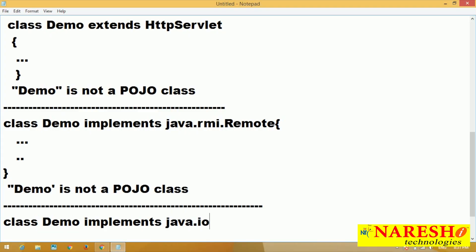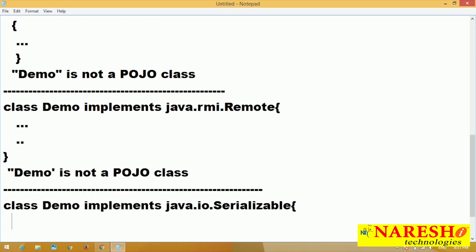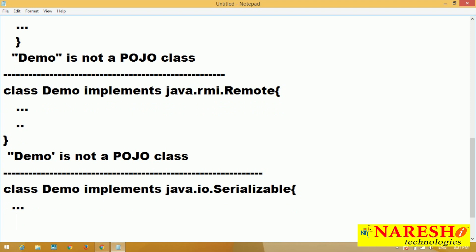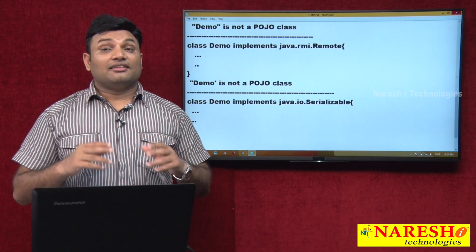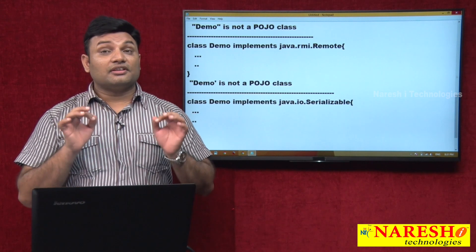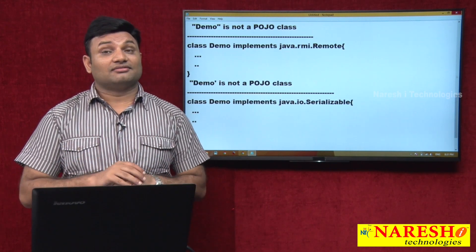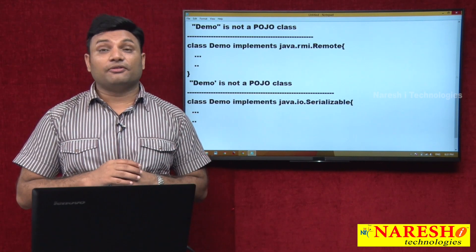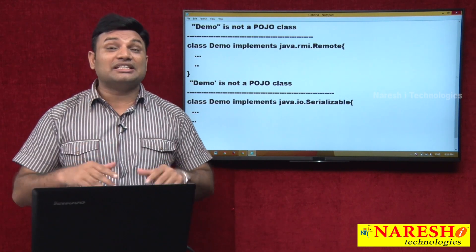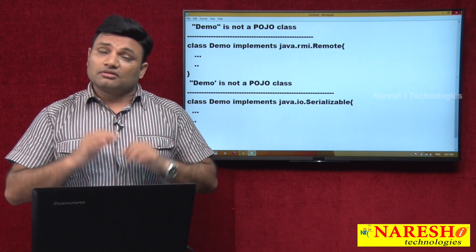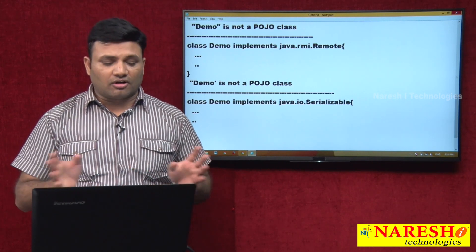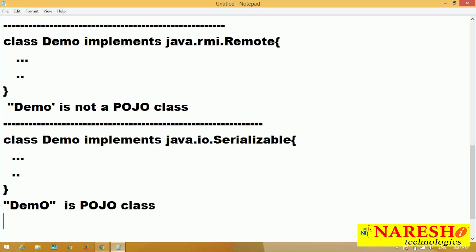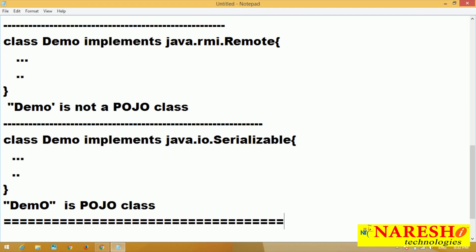Class Demo implements java.io.Serializable. The class is implementing the Serializable interface. But Serializable interface is part of Java language — not part of any technology, not part of any framework API. It is given by Java language. So we can call this a POJO class. Here, Demo is a POJO class.